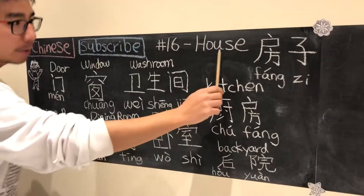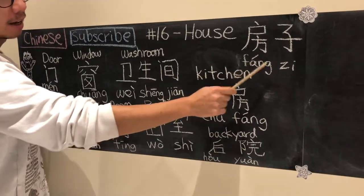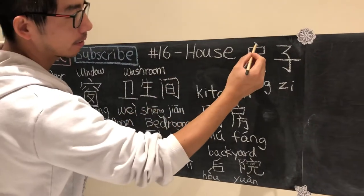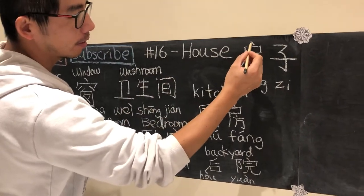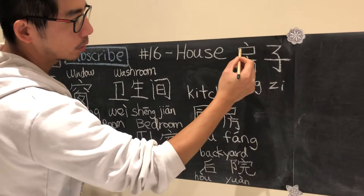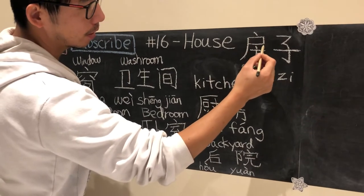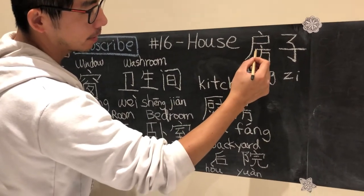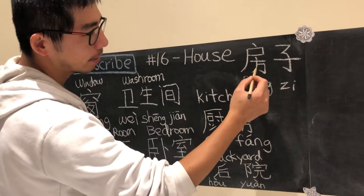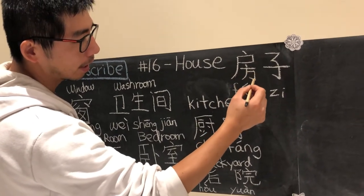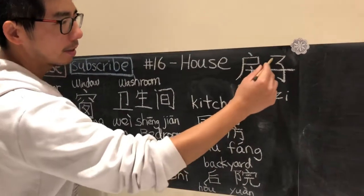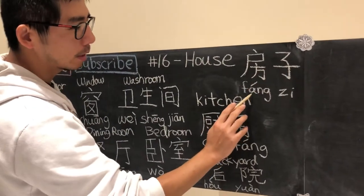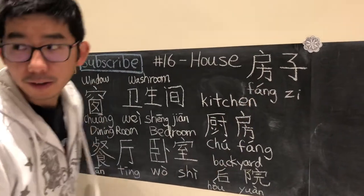To say house is 房子. This is the character for 房 — it has eight strokes. That's the pinyin for 房子.